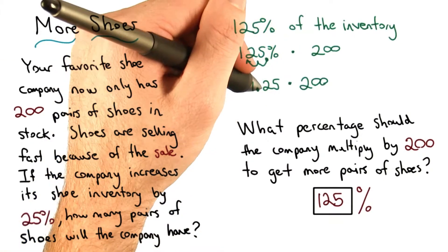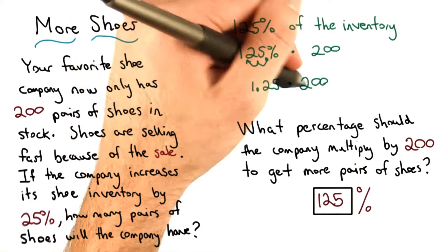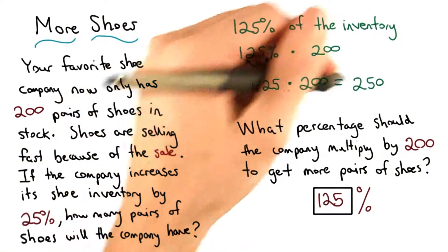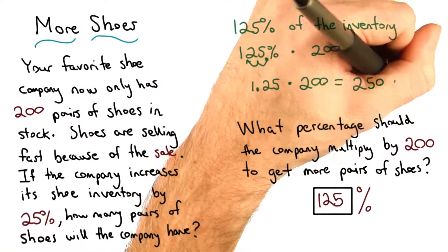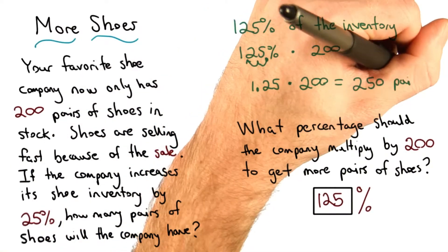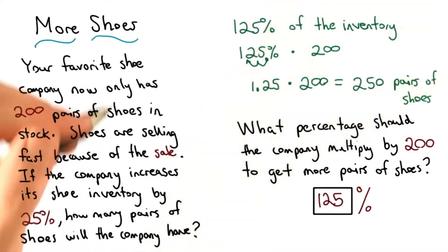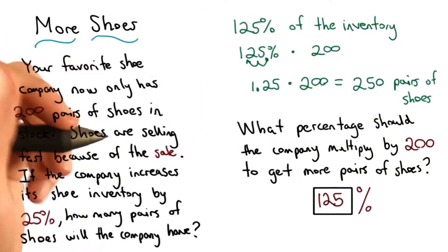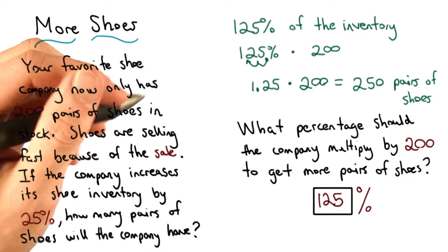I have 1.25 times 200. When I multiply, I get 250 pairs of shoes. Okay, this is great, and we can actually make sense of this another way.